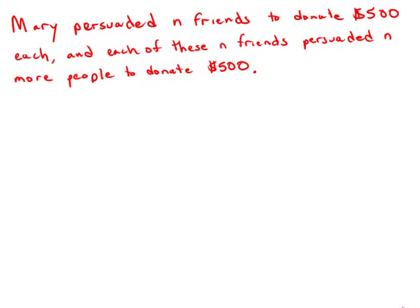Mary persuaded N friends to donate $500 each to her election campaign, and then each of these N friends persuaded N more people to donate $500 each to Mary's campaign. If no one donated more than once and there were no other donations, what was the value of N?